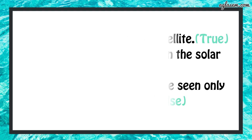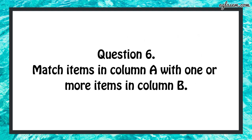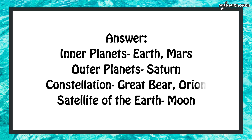Question number 6: match the items in column A with one or more items in column B. Inner planet - Earth and Mars. Outer planet - Saturn. Constellation - Great Bear or Orion. Satellite of the Earth - Moon.